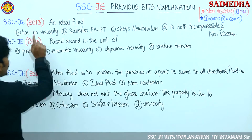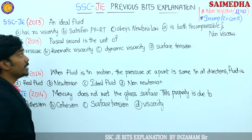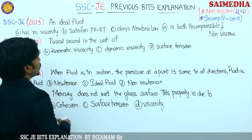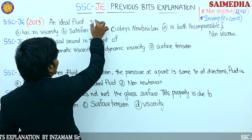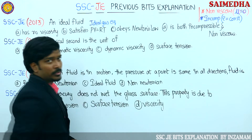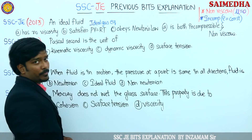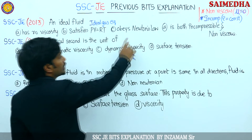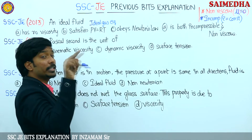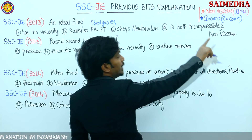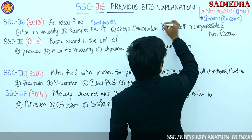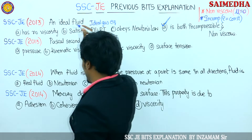Option A: it has no viscosity - absolutely correct. Option B: satisfies PV equals RT - that is the ideal gas equation, thermodynamic theory. We are talking about fluid here, not gas. Option C: obeys Newton's law of viscosity - that is for Newtonian fluid. Option D: is both incompressible and non-viscous - incompressible and non-viscous. So which one is the correct answer? Option D.